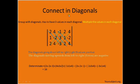Now, you connect in diagonals. You group with diagonals, and it has to have three values in each diagonal, and you multiply the values in each diagonal together.